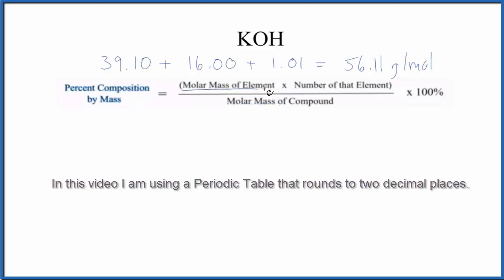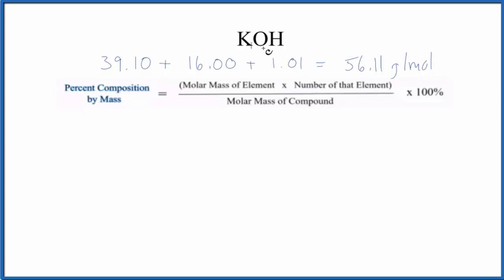Now we're going to look at each element, and we're going to multiply each element by the number of that element. Here, we only have one of each element, so that'll simplify this equation.